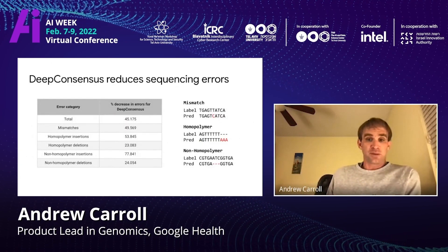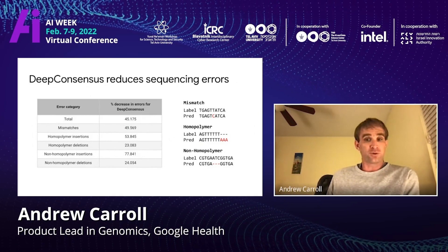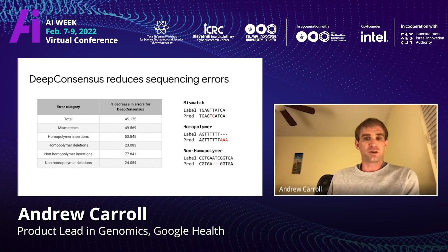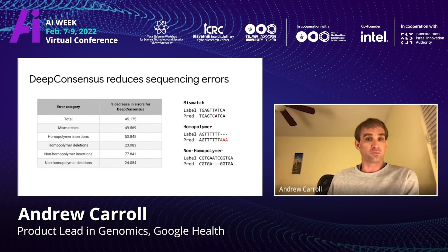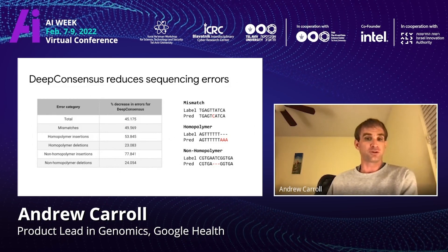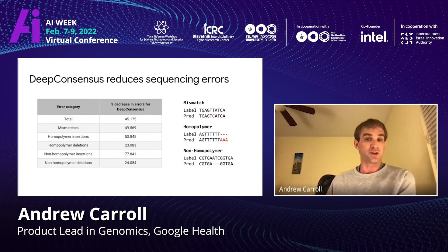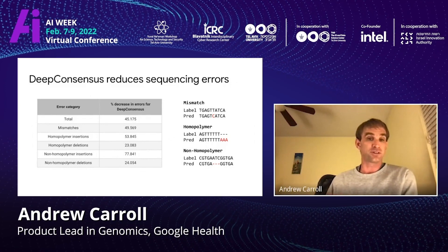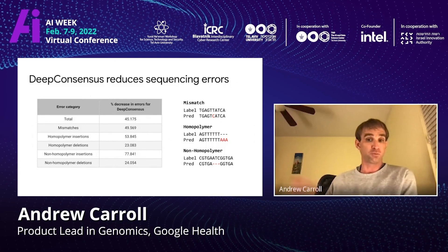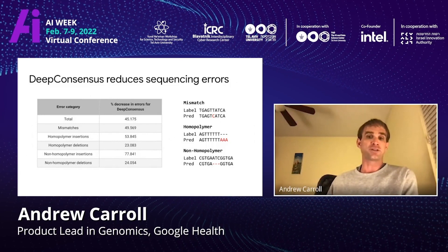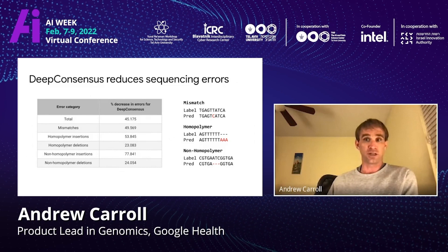DeepConsensus is able to reduce sequencing errors by 45% relative to the prior state-of-the-art, which is a hidden Markov model approach. It's also able to reduce errors across each of the different types of sequencing errors that this instrument makes. This makes a large difference for the throughput of the instrument, as well as for downstream applications like genome assembly and variant calling.